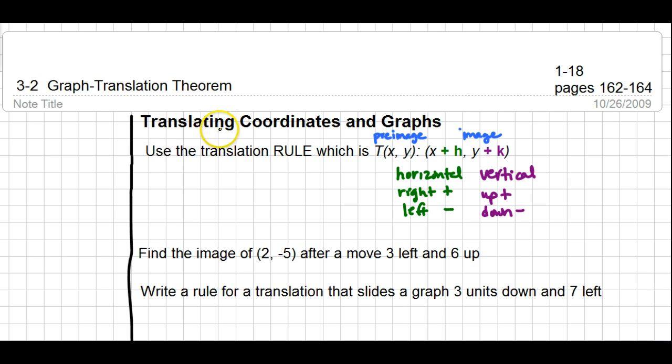Typically when you're asked to translate something, another word for that is to slide. So if you're translating or sliding a coordinate or a graph, typically the book or the instructions will give you a translation rule to go by. Typically they will use a capital T for translation and they'll tell you what your pre-image looks like, typically an X and a Y. And then they'll tell you how the image should be transformed.